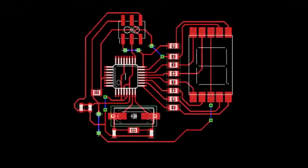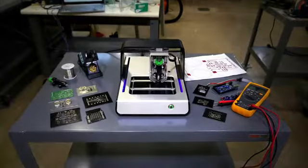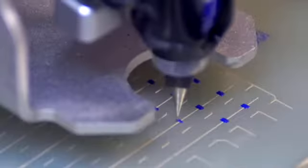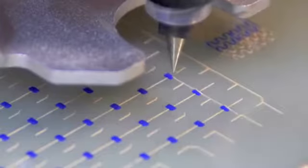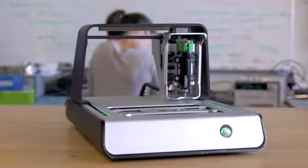Just create your layout in whatever program you're already comfortable with. Pass our software the Gerber files, and then press print. We designed this tool to help hardware developers see their ideas come to life faster than ever before. We use conductive and insulating ink to create fully functional two-layer circuit boards without ever having to email files around or wait for the FedEx truck.